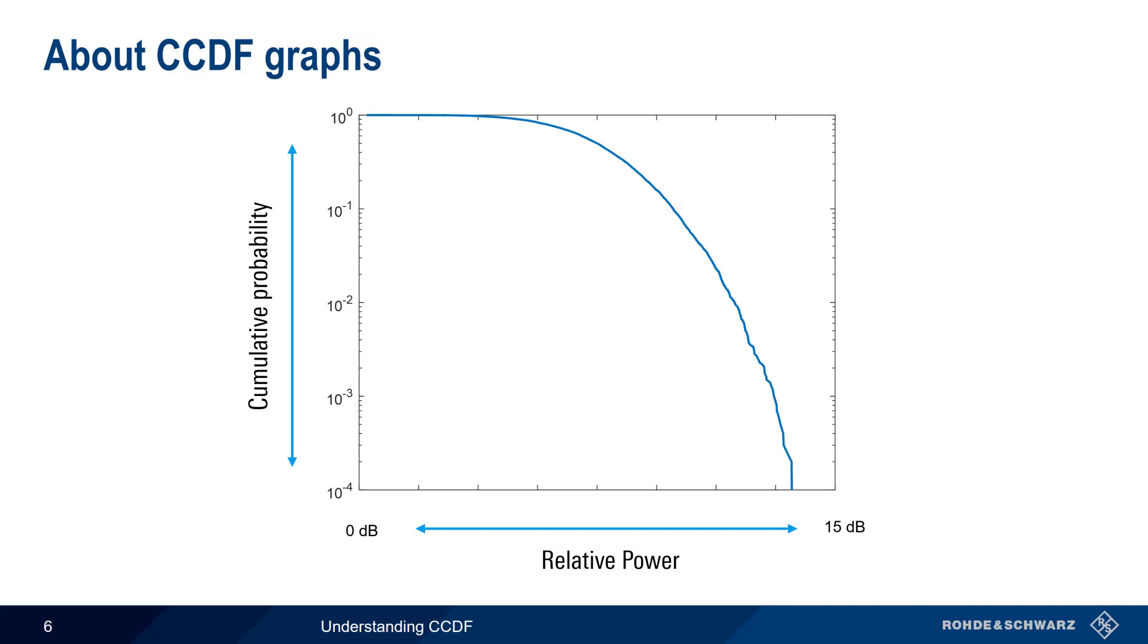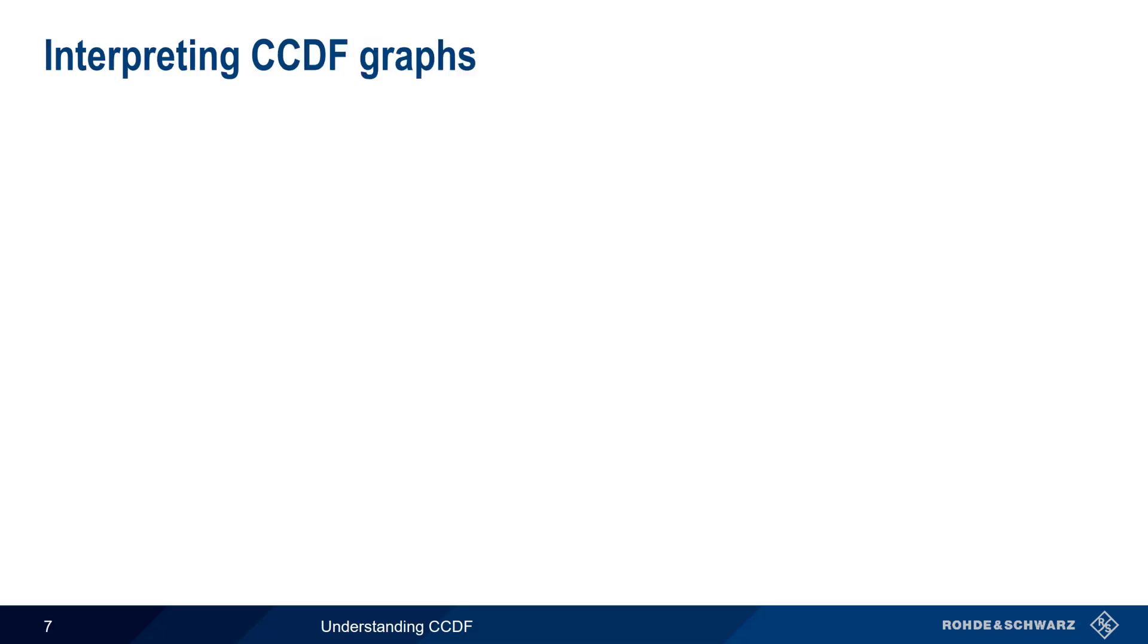Remember that a point on the CCDF graph shows the probability or the percent of time that a signal is at or above a certain level. In this relative graph, we see that 10% of the time the power is 11 dBm or more above the average level.